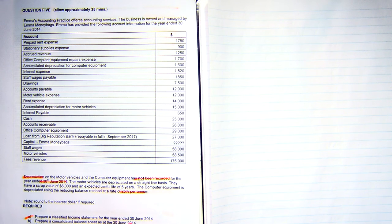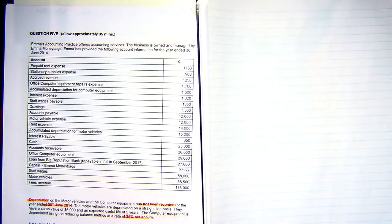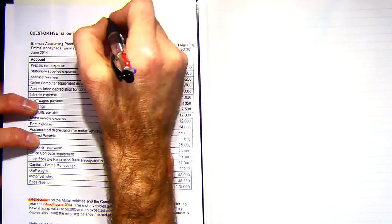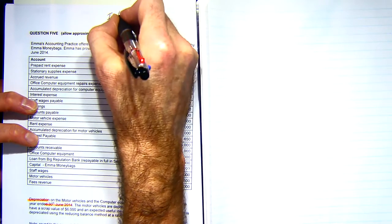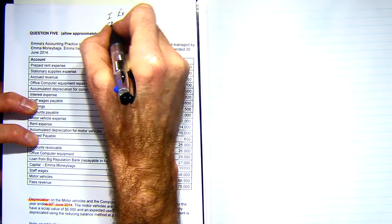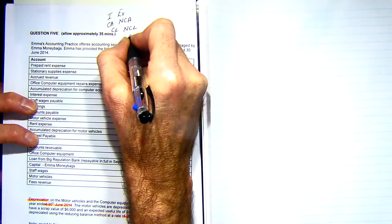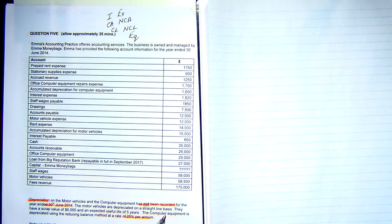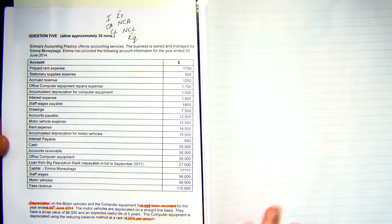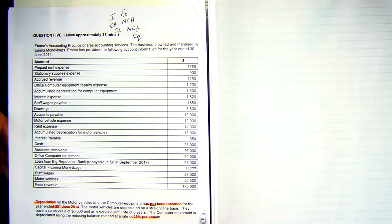First question: prepare a classified income statement for the year ended 30th of June 2014. Before we actually do this, we need to make some calculations. When doing an income statement and a balance sheet, the first thing we need to do is classify. We're classifying into income, expenses, current assets, non-current assets, current liabilities, non-current liabilities, and equity. So those are the classifications we have to make.